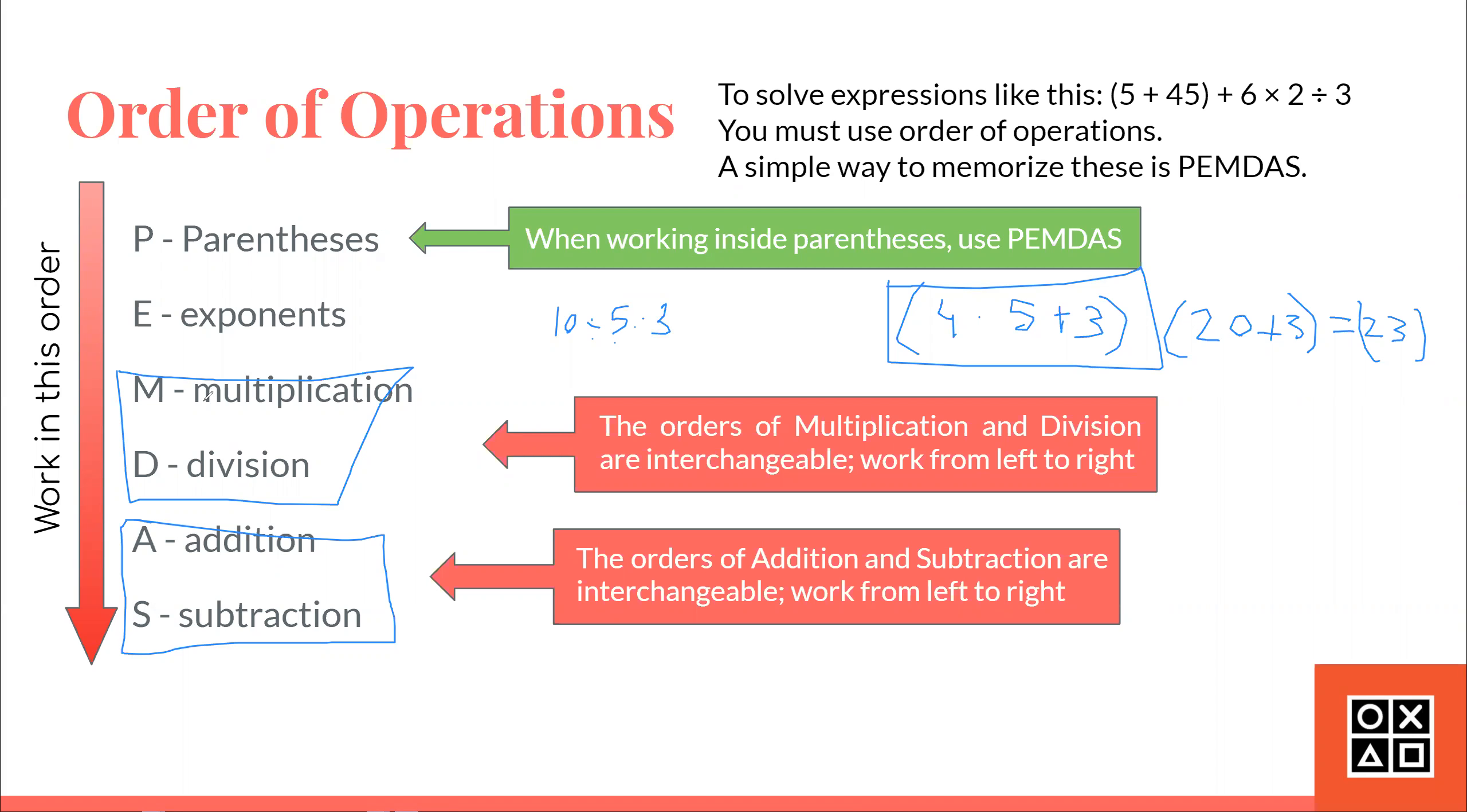So, a better example of this would be 10 divided by 5 times 3. So, in this case, you would think that, oh yeah, M comes first, so you have to do 5 times 3, but that is incorrect. You have to do 10 divided by 5 first, which results in 2 times 3 would be 6.